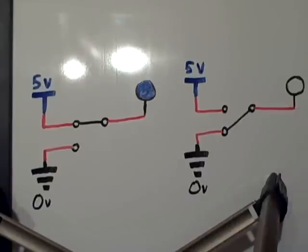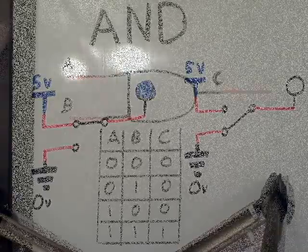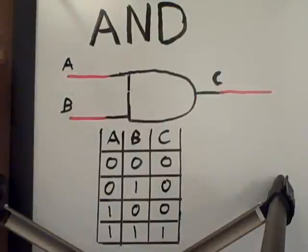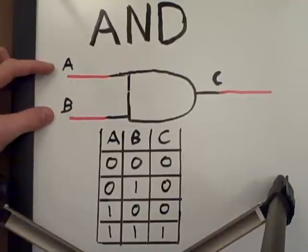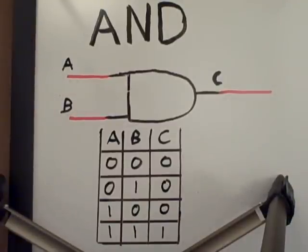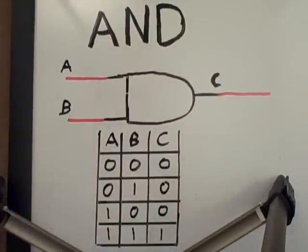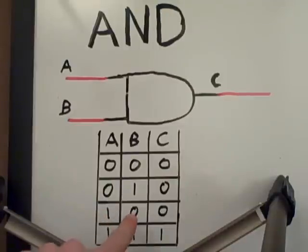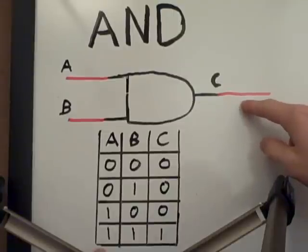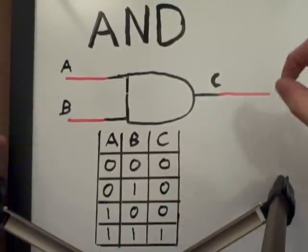This switch right here is hooked up to the ground — that's zero volts — and you can call that off, no, or zero. This is one of the gates we used in the circuit: an AND gate. As you can see, it has two inputs, A and B, and one output, C. In a scenario where A and B are both zero, C is also going to be zero. When A is zero and B is one, it's also going to output a zero. This thing will only output a one for C when both A and B are one.